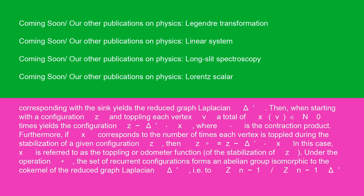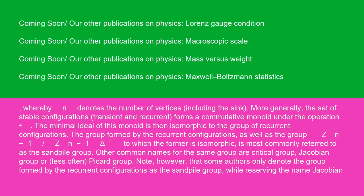Under the operation *, the set of recurrent configurations forms an Abelian group isomorphic to the cokernel of the reduced graph Laplacian Δ̃, i.e., to ℤⁿ⁻¹ / ℤⁿ⁻¹Δ̃, whereby N denotes the number of vertices including the sink. More generally, the set of stable configurations — transient and recurrent — forms a commutative monoid under the operation *. The minimal ideal of this monoid is then isomorphic to the group of recurrent configurations. The group formed by the recurrent configurations, as well as the group ℤⁿ⁻¹ / ℤⁿ⁻¹Δ̃ to which the former is isomorphic, is most commonly referred to as the sandpile group. Other common names for the same group are critical group, Jacobian group, or, less often, Picard group.